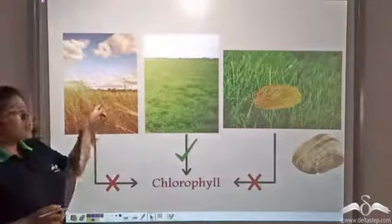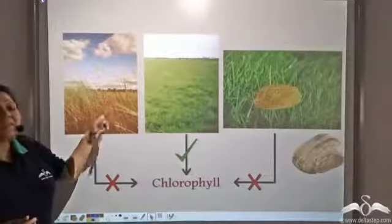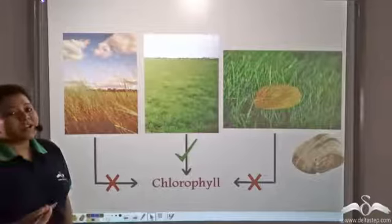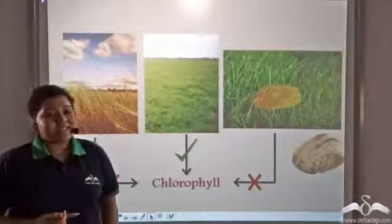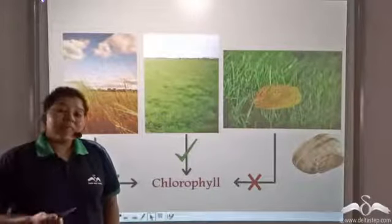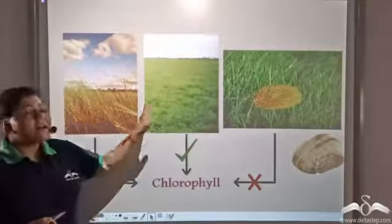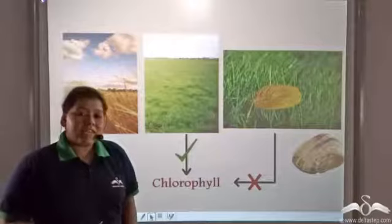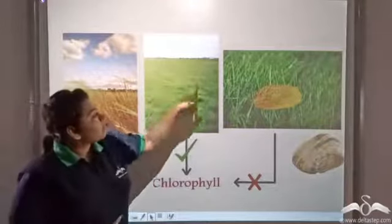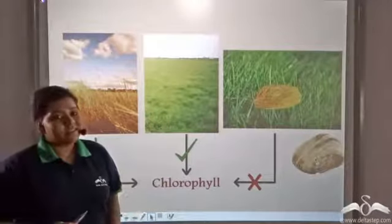But in scorching summers, plants become non-green, they become yellowish and die off. This is because chlorophyll is also light-sensitive. Too much light can kill the chlorophyll. But in other seasons where there is optimum amount of light, the chlorophyll survives and the plants are very green in colour.